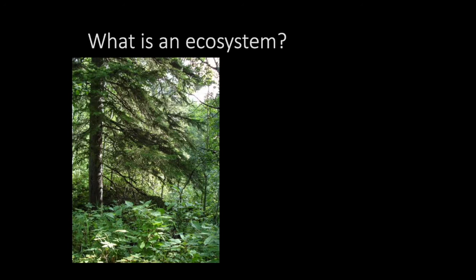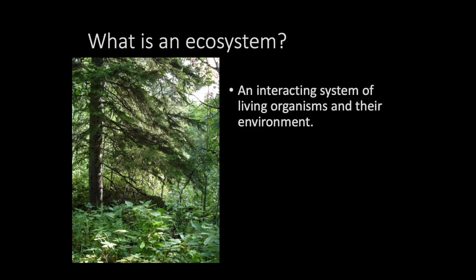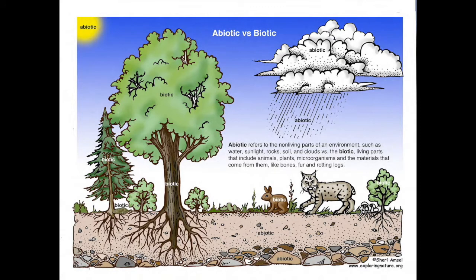So what is an ecosystem? Well, it can be described as an interacting system of living organisms and their environment, consisting of living and non-living things. You can see from this diagram that the forest ecosystem consists of many abiotic, or non-living things, and biotic, or living things. For example, the trees and animals are biotic factors, while rocks and soil are abiotic factors.